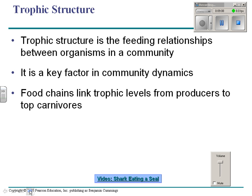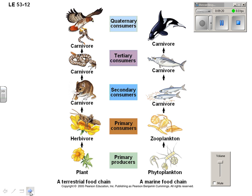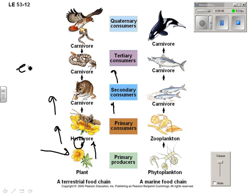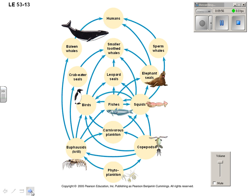Trophic structure is the feeding relationships between organisms in a community — this is the concept of food chains and food webs. You have primary producers eaten by primary consumers, which are eaten by secondary consumers, then tertiary consumers, then quaternary consumers. The arrows go in the direction of energy flow. A food web is really an interconnecting set of food chains.